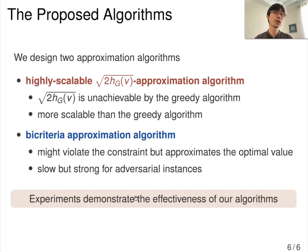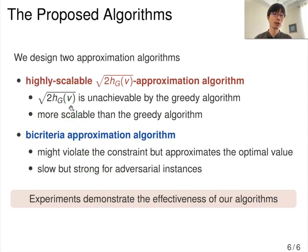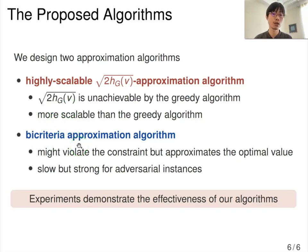In this study, we designed two approximation algorithms. The first is a highly scalable approximation algorithm that achieves a non-trivial approximation ratio, which is unachievable by the greedy algorithm, and this algorithm is more scalable than the greedy algorithm. The second one is a bi-criteria approximation algorithm, meaning that it might violate the constraint but approximates the original optimal value. This algorithm is slower but strong for adversarial instances.